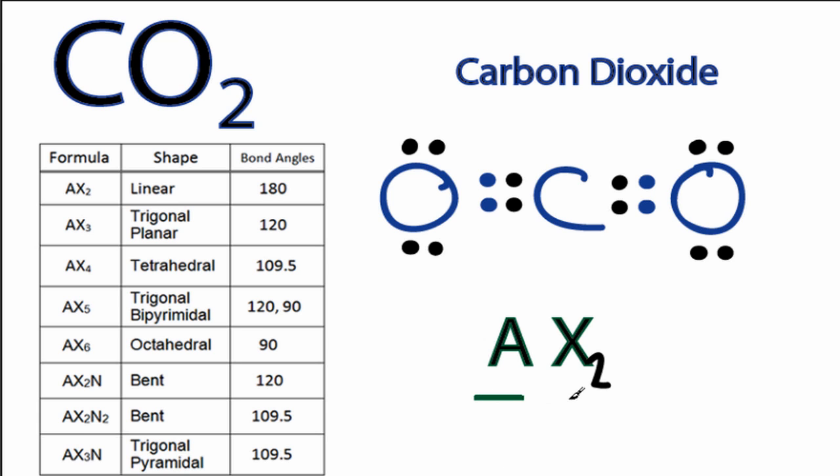When we refer to the table, if we look for the AX2, we can see that AX2 is linear. That's what we predicted with the valence shell electron pair repulsion theory, and we can see that the bond angle, that's 180, that's this line straight through the molecule.